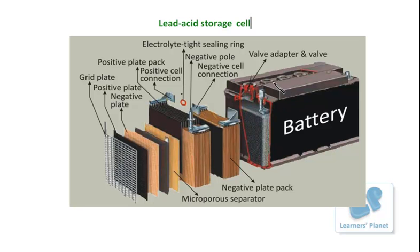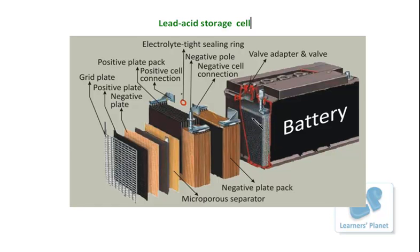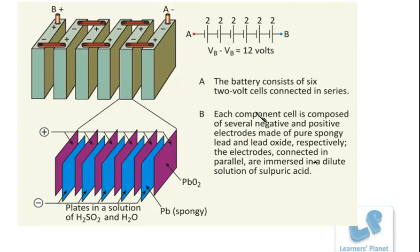This battery consists of six cells, and each cell consists of a stack of positive and negative plates immersed in the electrolyte, which is sulfuric acid. The sulfuric acid is used as the electrolyte at 38% by mass, with a density of 1.31 grams per cubic centimeter. This is a complete picture of the cell — the battery.